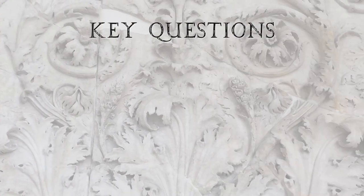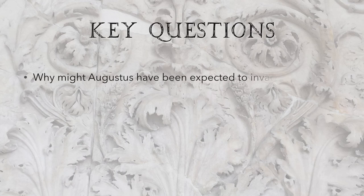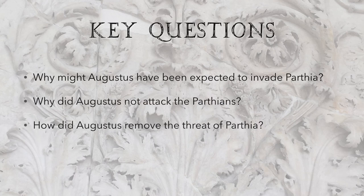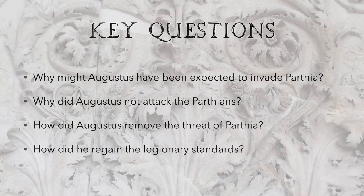So, key questions — make sure you've got the answers: why Augustus would be thought to want to invade Parthia and why he didn't; how he removed the threat of the Parthian Empire; and how he got back the standards. If you have any questions, make a note of them and we can discuss them in class.